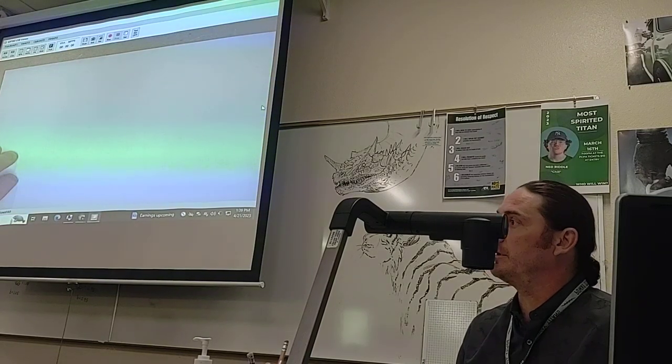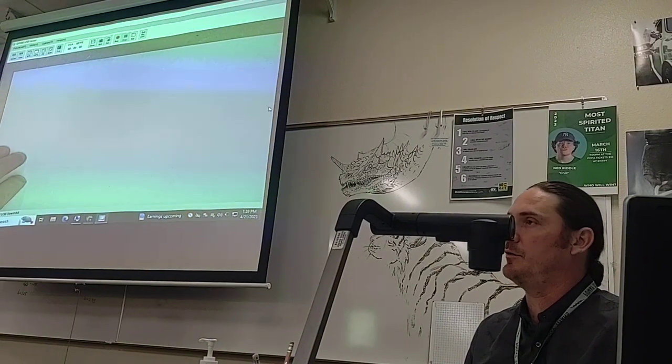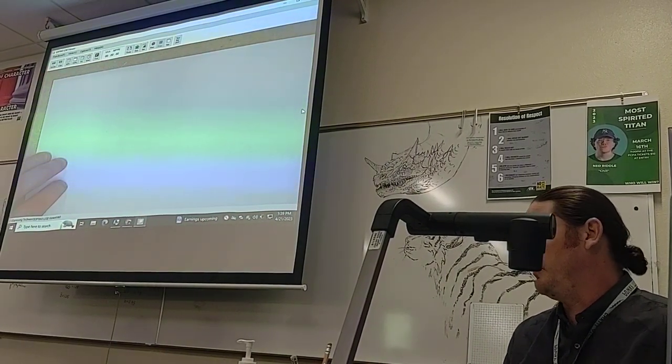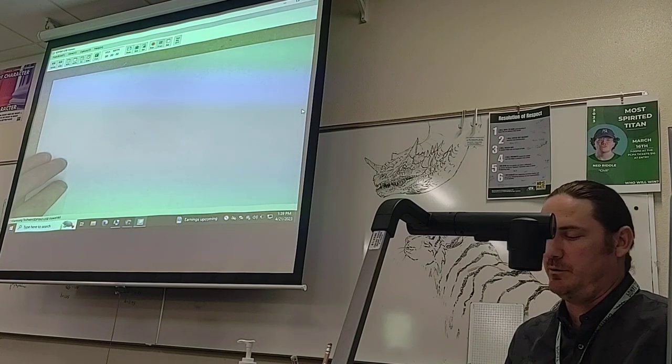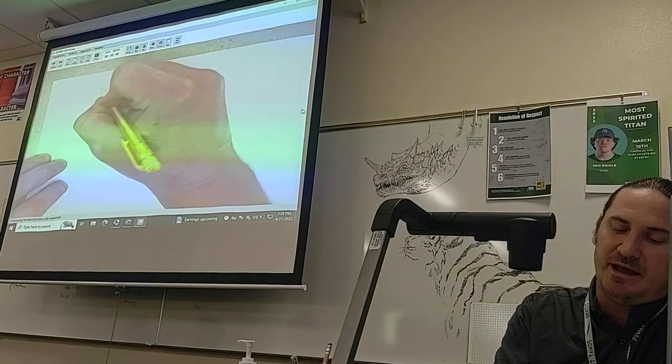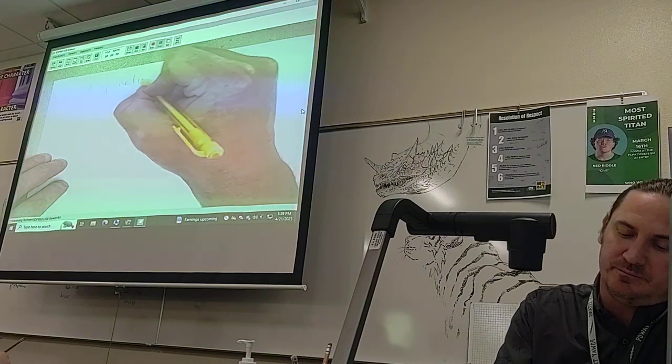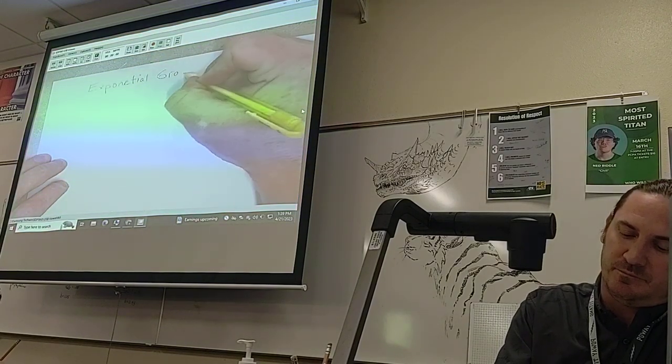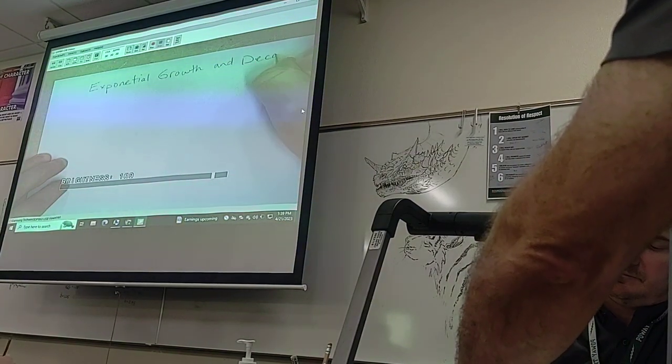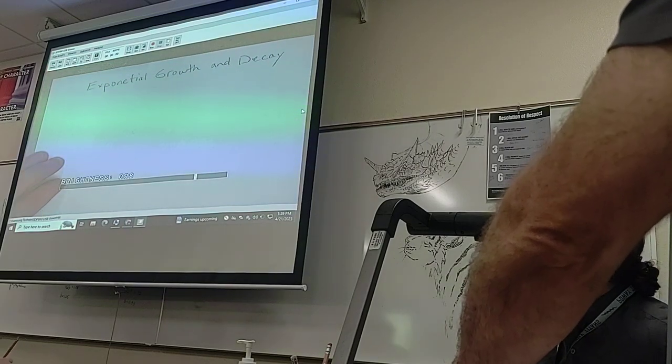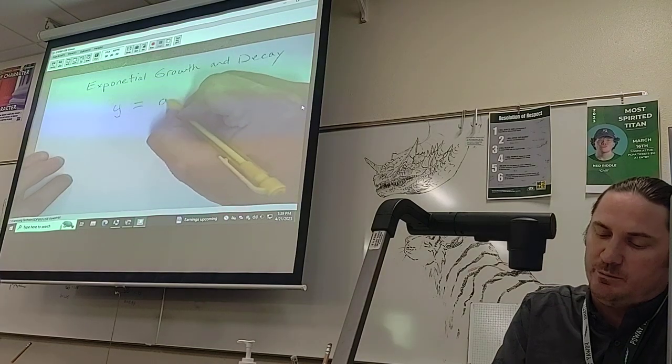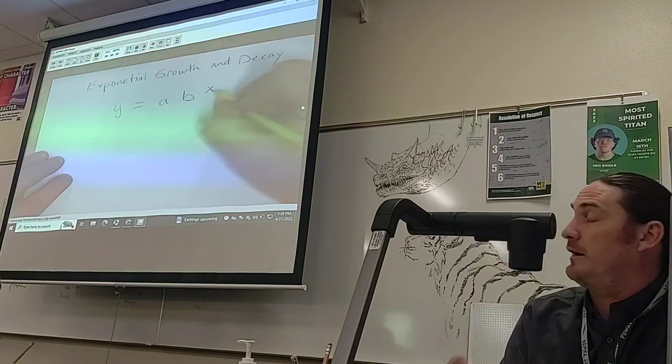Alright, so today we're going to go over exponential growth and decay. We've been kind of working on it for the last few days, so this is going to be the day where we can summarize everything that we're learning and go over the notes one more time. Exponential growth and decay is the lesson, and the formula for this is y equals a times b to the x power.